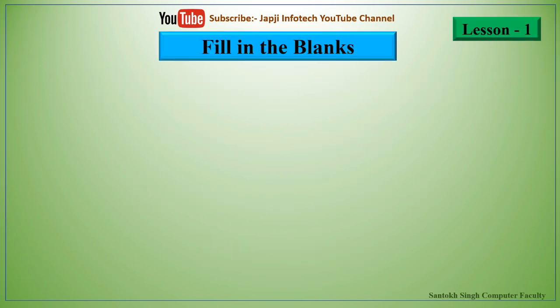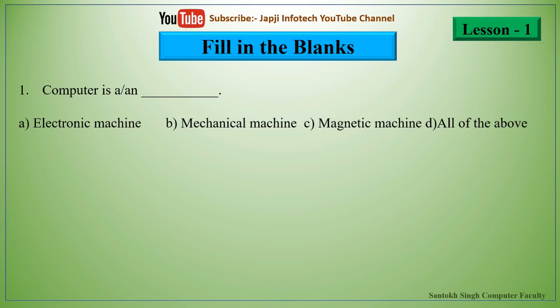We will now learn about fill in the blanks in lesson 1. The first fill in the blank is: computer is a/an blank. The options are electronic machine, mechanical machine, magnetic machine, or all of the above. The right answer is computer is an electronic machine. The second one is: computer can do blank.